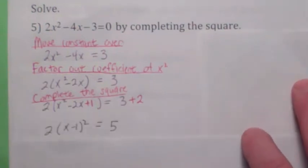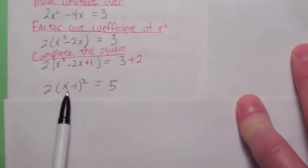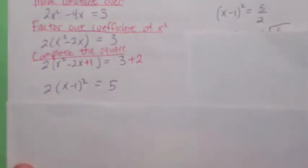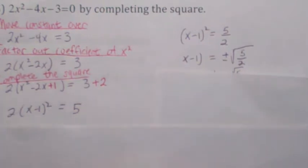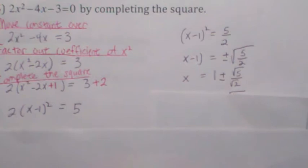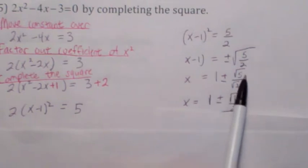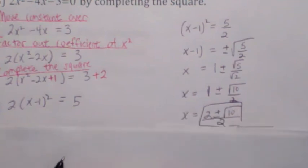Since it's a perfect square now, you can write x squared minus 2x plus 1 as the same thing as x minus 1 squared. Now we can finish the problem. You can divide by 2, and now you can take the square root of both sides — don't forget the plus or minus. Then let's rationalize the denominator: you can write it as radical 5 over radical 2, then multiply top and bottom by radical 2. So you get 1 plus or minus square root of 10 over 2. Now let's get the common denominator — your final answer is x equals 2 plus or minus square root of 10 over 2.